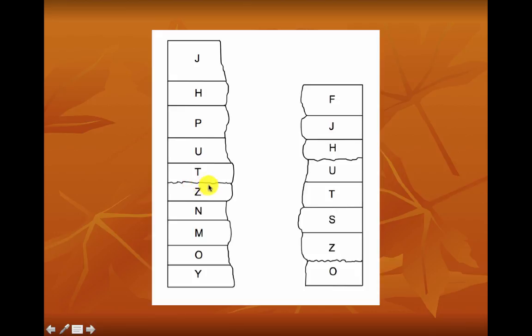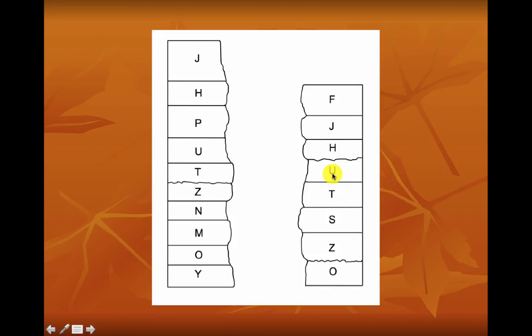Then we have another disconformity above Z in outcrop 1, meaning layers have disappeared from the rock record. In order to see which layers have disappeared, we need to correlate our other layers. Z correlates with layer Z in the other outcrop, and we can figure out which layers are missing. We are missing layer S, and then we have T and U. Please finish the rest of this relative dating activity.